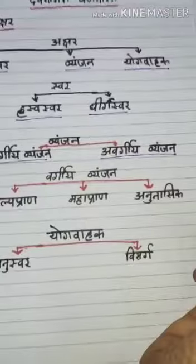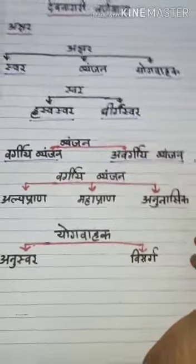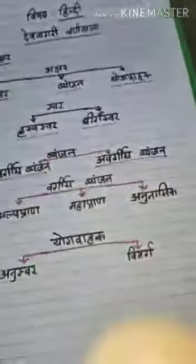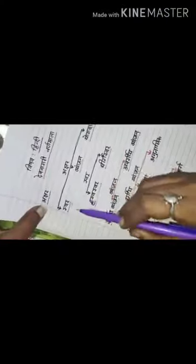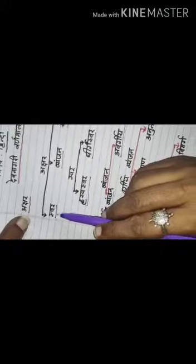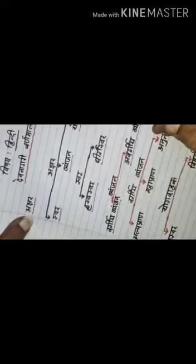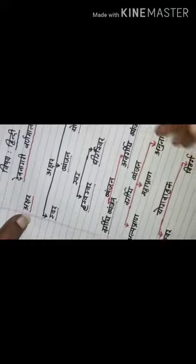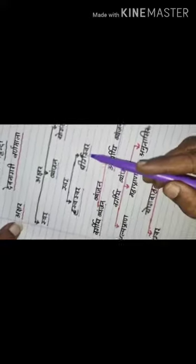In Akshar, there are three types: Swar, Venjan, and Yoga Vahak. In Swar, there are two types.